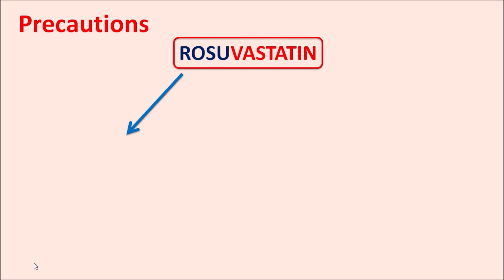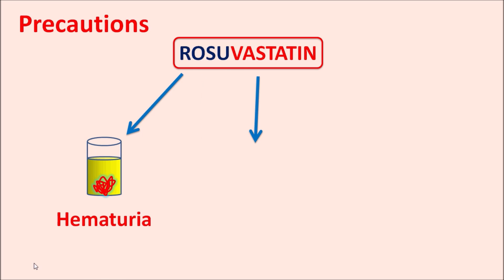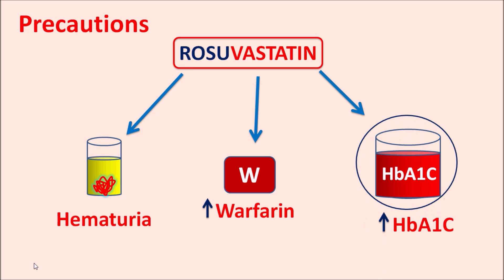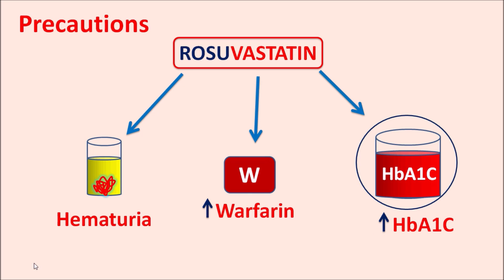Rosuvastatin can also increase protein precipitation, resulting in proteinuria and hematuria. It can also potentiate the action of warfarin, increasing the risk of hemorrhage. Additionally, it can affect endocrine hormones, resulting in increased HbA1c levels indicating elevated glucose, and if untreated, this may lead to diabetes in some patients.